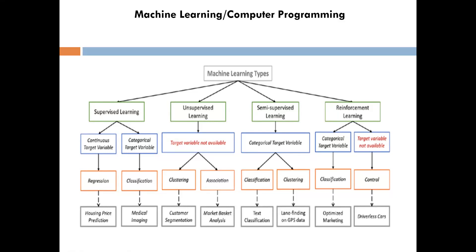Does ChatGPT come under reinforcement learning? Yes, ChatGPT comes under reinforcement learning. Why is it reinforcement learning? In the first three model types we're not talking about text — it's all about structured data. ChatGPT converts its output into structured data using tokens. One token represents one word or one categorical piece of information, and then the next word is predicted.